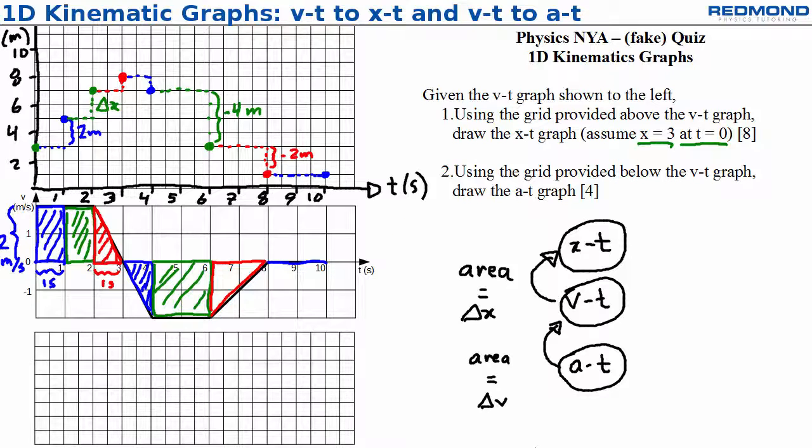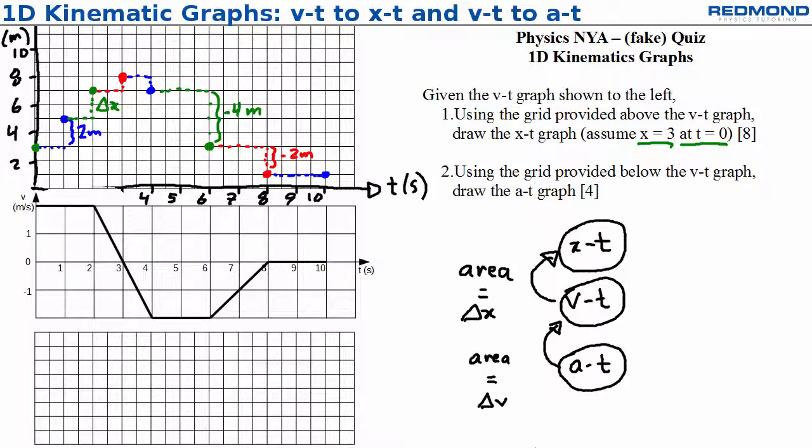Now we have the points and just need to connect the dots, but I need to clearly show which segments are straight and which are parabolic. When the velocity is constant, the XT graph should have a straight line. Here, the velocity is constant from 0 to 2 seconds, from 4 to 6 seconds, and from 8 to 10 seconds.